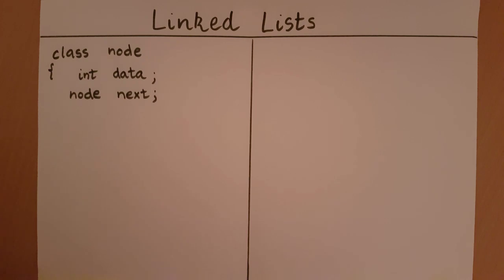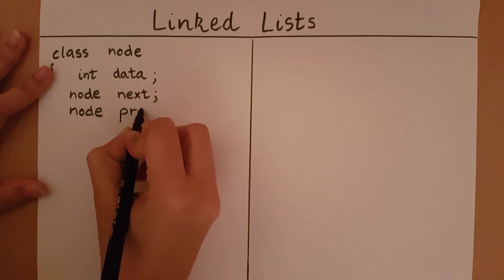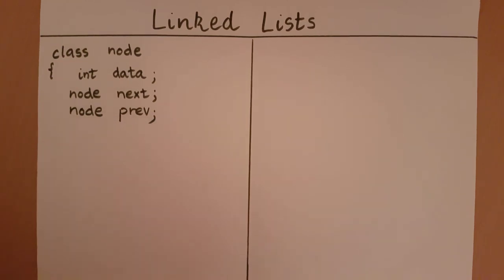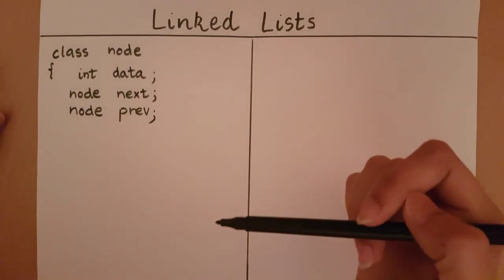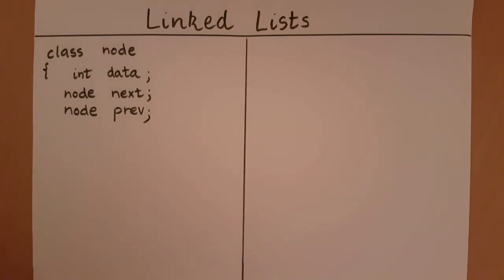Similarly, I will also want to keep the address of the previous node in the linked list. In the same way, I am going to create an object of type node and call it 'prev', standing for previous. So as you can see, we have a class in which we are creating objects of the same class. This is known as a self-referential class — the node is a self-referential object, because in the class we have data members which are objects of the same class.